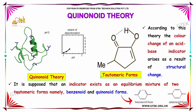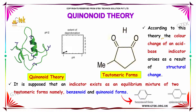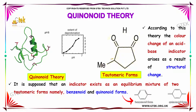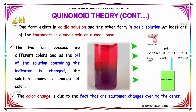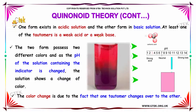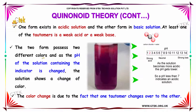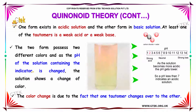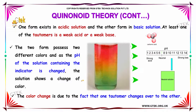This is another theory based on structure: the quinonoid theory. According to this theory, the color change of an acid-base indicator arises as a result of structural change. It is supposed that an indicator exists as an equilibrium mixture of two tautomeric forms — one is benzenoid and the other is quinonoid. One form exists in acidic solution and the other in basic solution. At least one of the tautomers is a weak acid or a weak base. The two forms possess two different colors, and as the pH of the solution changes, the solution shows a change of color due to the conversion of one tautomer to the other.